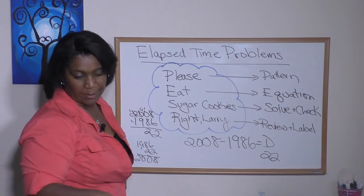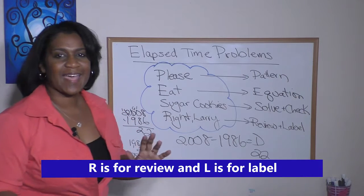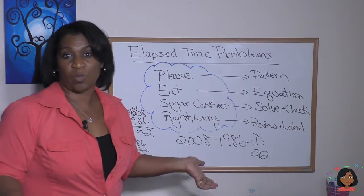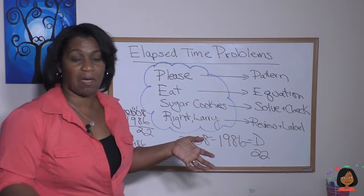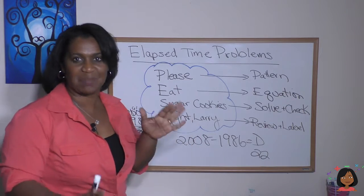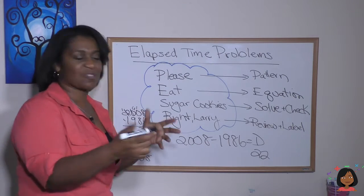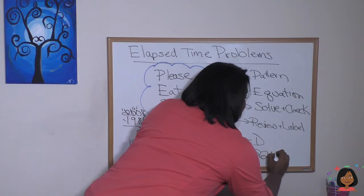And now let's do Right Larry, that's my favorite part. Right Larry. Let's review and label. So does it make sense that he was around 22 years old when he won his first Olympic medal? Yeah, that makes sense. 22 years old sounds like a reasonable time to win the Olympic medal. And we add our label: he was 22 years old.